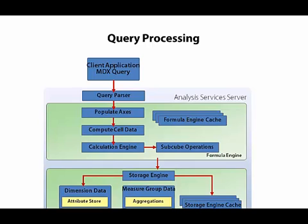It looks first in the storage engine cache. If another user has requested the same data, then it exists in the storage engine cache, and the storage engine returns what it has — and that's the fastest possible operation.